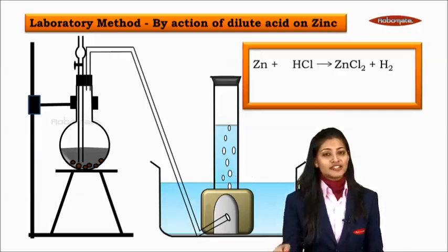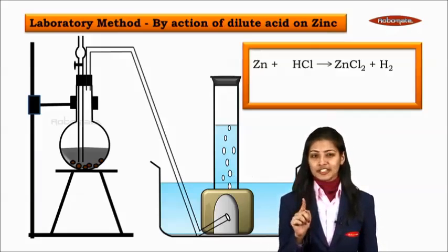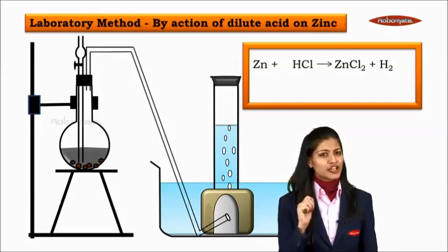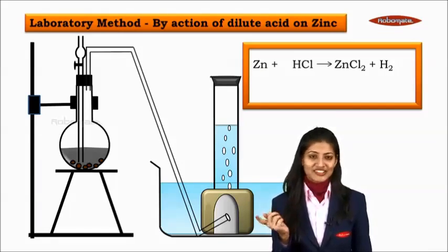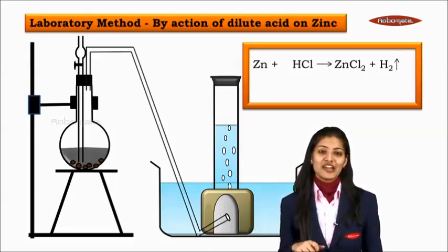So the reaction that is taking place inside the apparatus is zinc, when it comes in contact with HCl, you get zinc chloride which is ZnCl2 along with hydrogen gas.